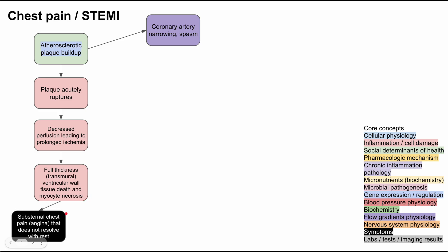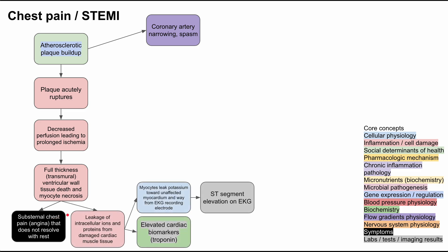This leads to a substernal chest pain called angina that does not resolve with rest — that's unstable angina. On the molecular level, it leads to leakage of intracellular ions and proteins from damaged cardiac muscle tissue, causing elevated cardiac biomarkers; your troponin levels will be high, which is one of the signals that someone is having a heart attack. This also leads to myocytes leaking potassium ions toward the unaffected myocardium, directed away from the EKG recording electrode, causing the actual ST segment elevation on the EKG recording.